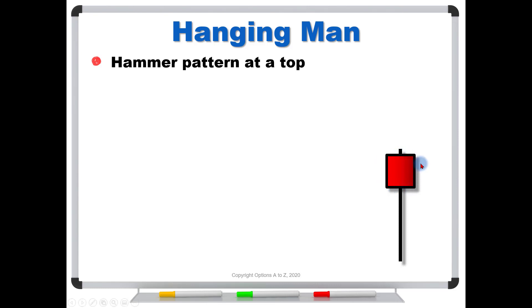This is what it looks like over here and you have to kind of use your imagination but this is kind of like the person's head up here and these are the feet dangling down. So it's still a hammer, it's just that if it occurs at a top they give it a special name and they call it a hanging man. When we see this hammer at a top the candle color isn't so important although we would prefer to see it red if it's occurring at a top.